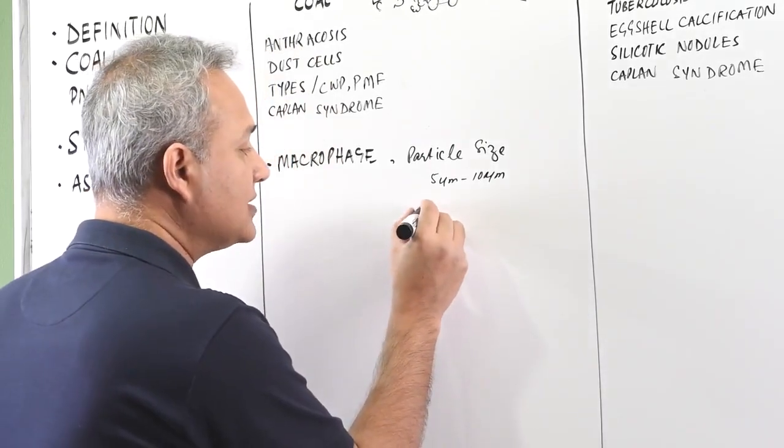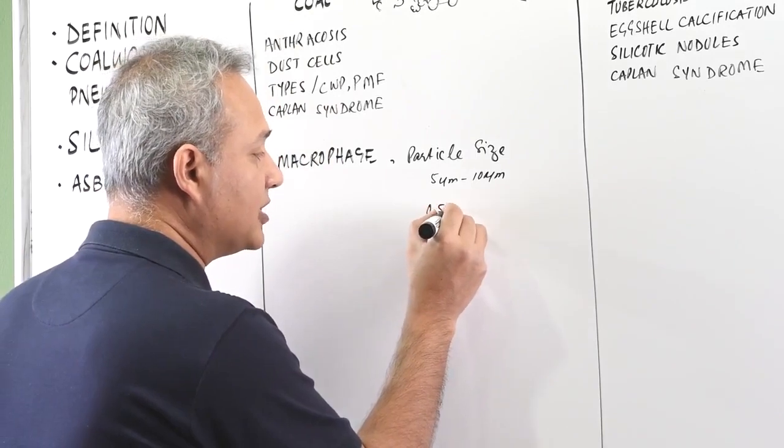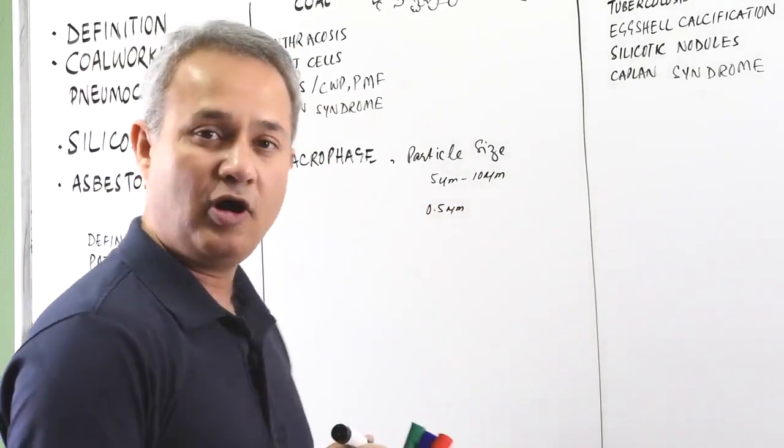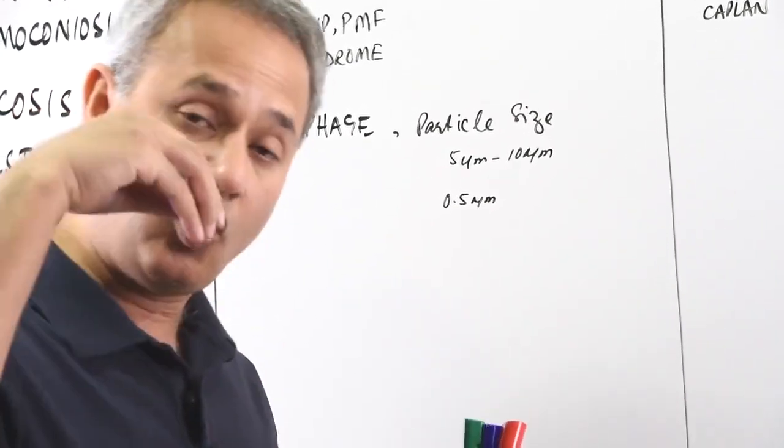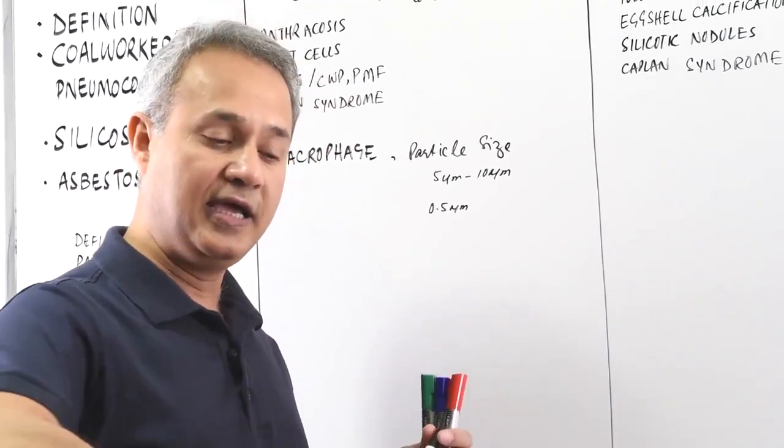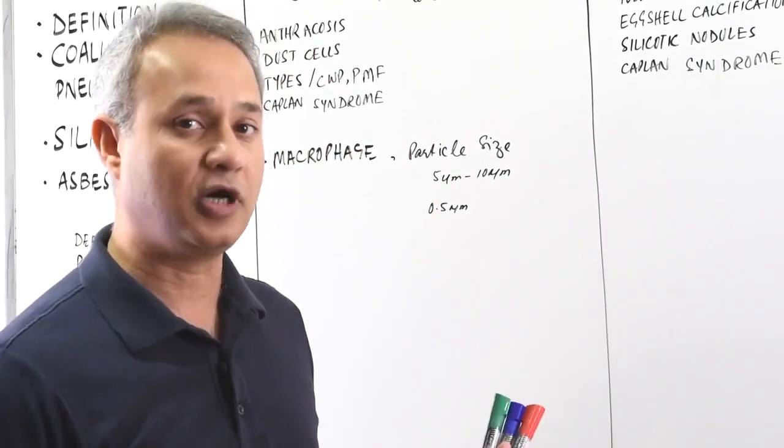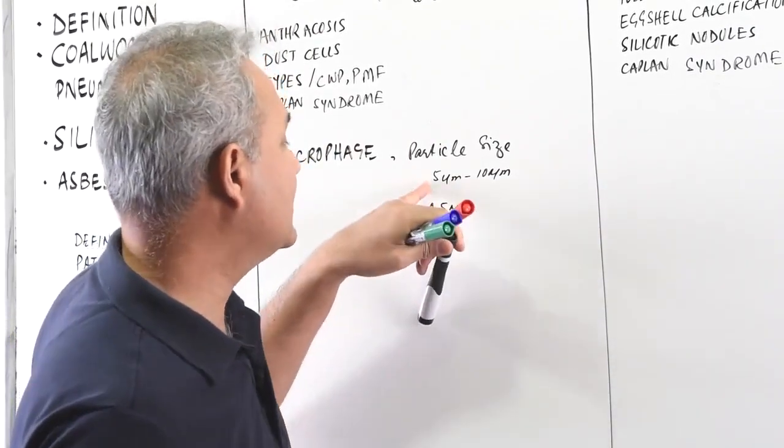The particles that are 0.5 micrometer or smaller, they almost act as gases and they can go in just like other gases all the way up to the alveoli and then come back out without any problem. So they are okay.